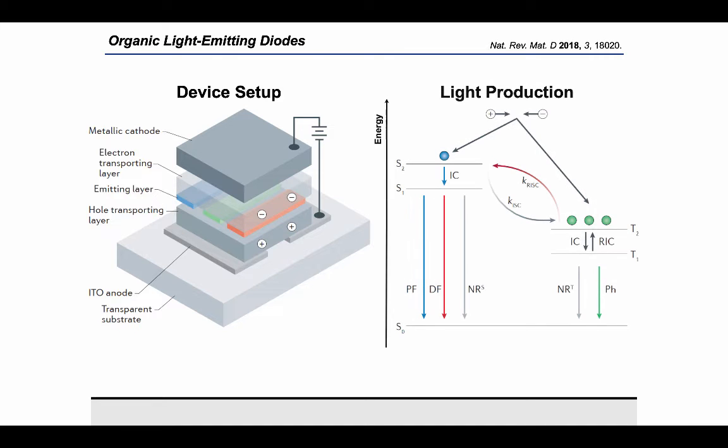When the charge carriers meet in the emissive layer, both singlet and triplet excitons are produced in a 1 to 3 ratio due to spin statistics. Initially, they are produced in higher excited states, which, in most molecules, immediately relax via internal conversion to the corresponding first excited states.